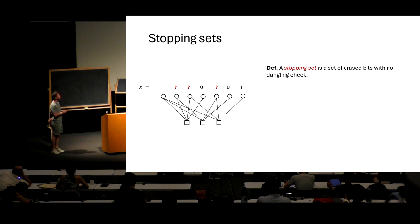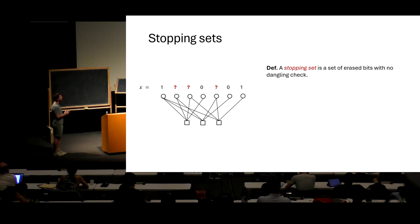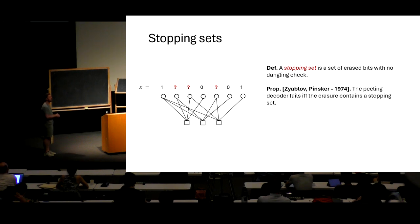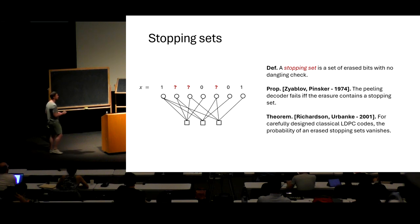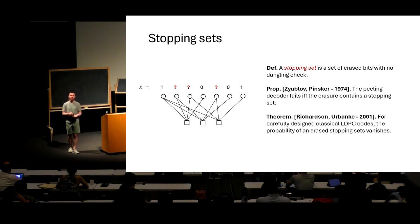The decoder fails when there is a stopping set: a set of erased bits with no dangling check. Every check incident to this set is incident to at least two question marks, so we cannot resolve any of them. The decoder claims that it fails if and only if the erasure contains a stopping set. About 20 years ago, Richardson and Urbanke designed families of LDPC codes by carefully selecting random graphs and removing short cycles, such that the probability of encountering a stopping set — a failing configuration — vanishes.